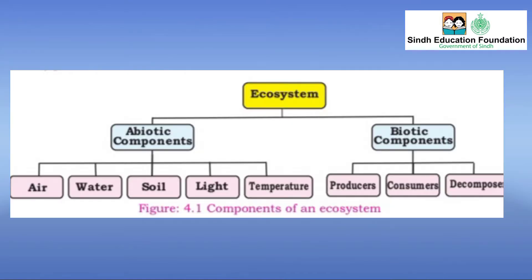Ecosystem. Ecosystem is the interaction between living things and non-living things. Living things are biotic components and non-living things are abiotic components. This interaction may be for the sake of food, shelter, protection and reproduction.